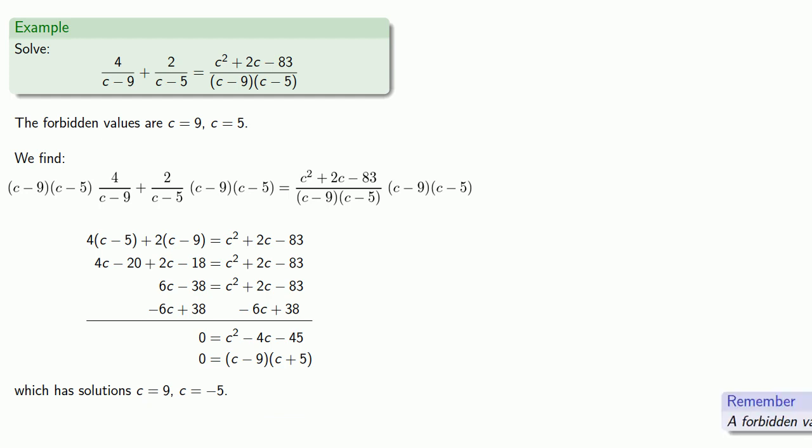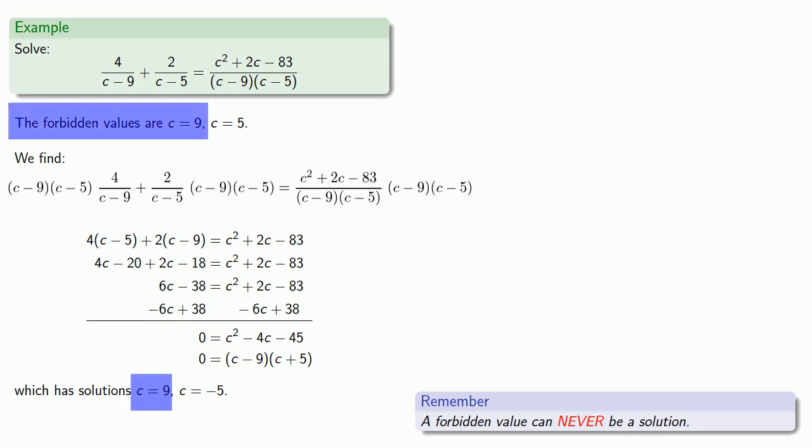But remember, a forbidden value can never be a solution. And c equals 9 is one of our forbidden values, so this is not a solution. And in fact, the only solution is c equals negative 5.